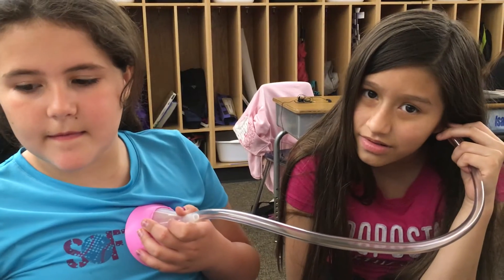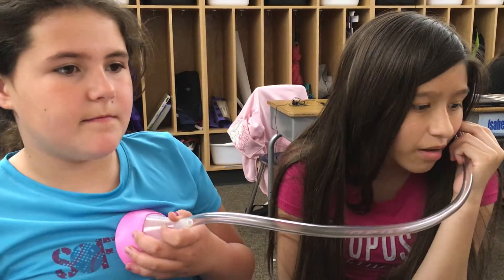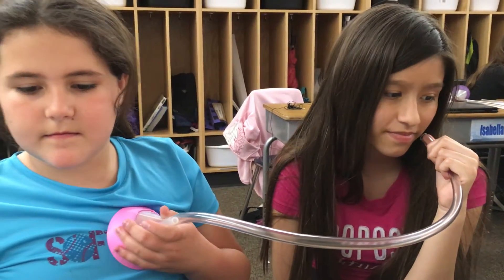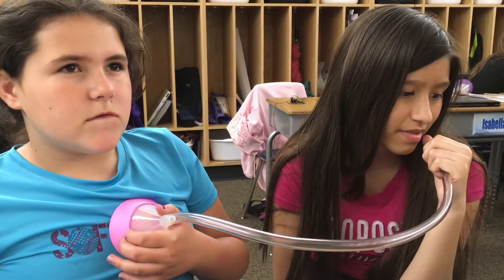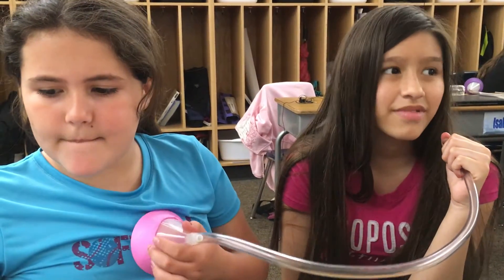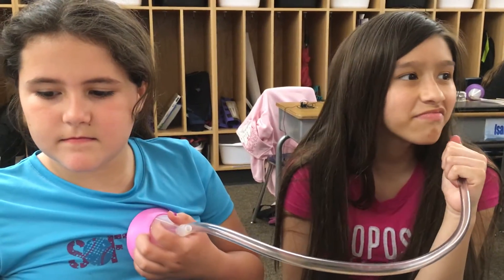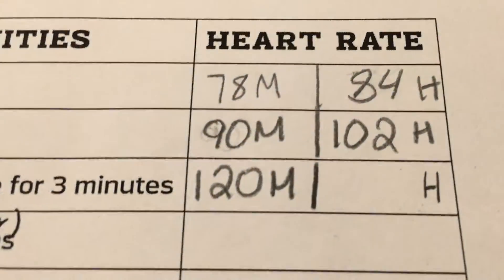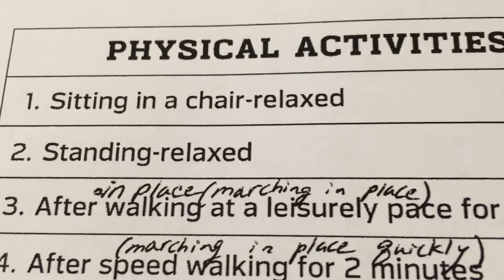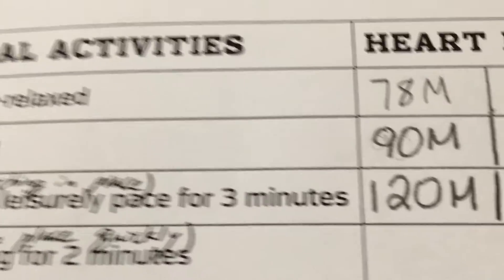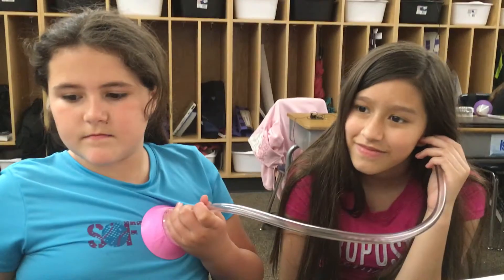When you stood up was it more or less? More — yeah, more, a little more. How much more when you stood up? Like 10 more beats. I'm looking at your chart here — you've been charting. Over here we've got sitting, standing, marching in place, and you're up to 120 beats a minute just marching in place.